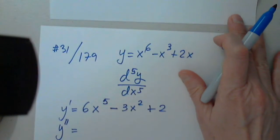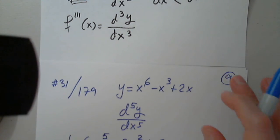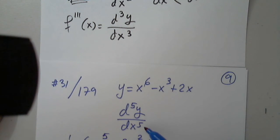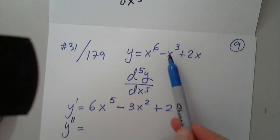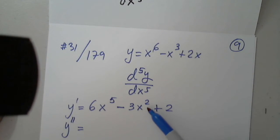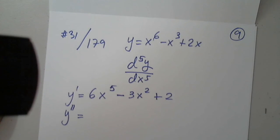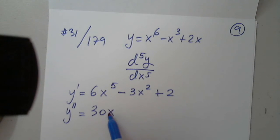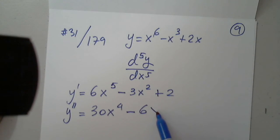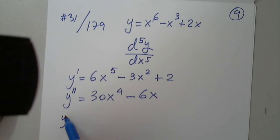Can anyone give us the second derivative? Did the 5 come from 6 minus 1? Yes, exactly — like the 2 came from 3 minus 1. Would it be 30x to the fourth minus 6x? Brilliant — done, because the constant's derivative is zero. Very good. Can anyone give us the third derivative?